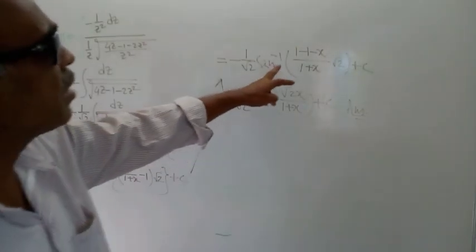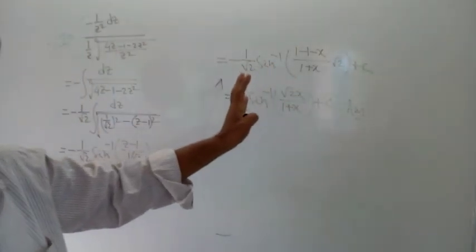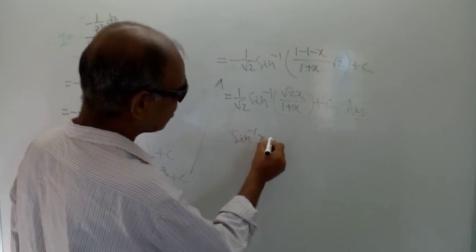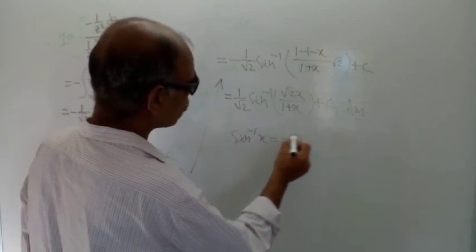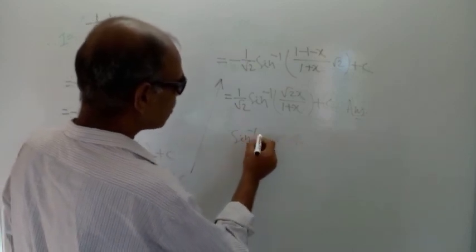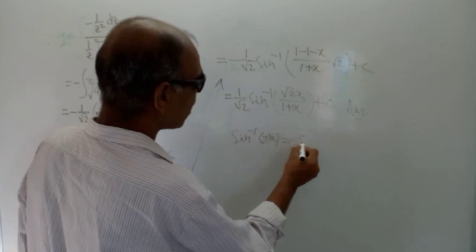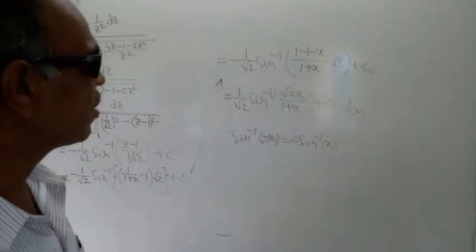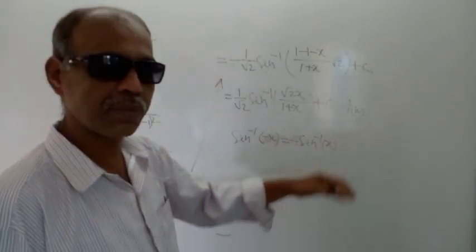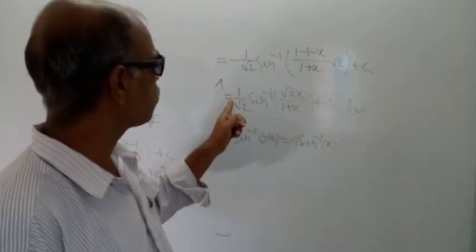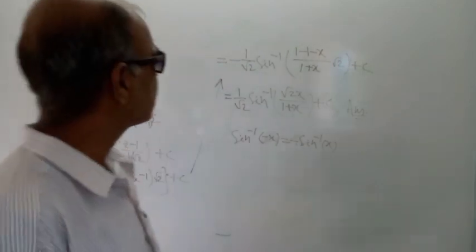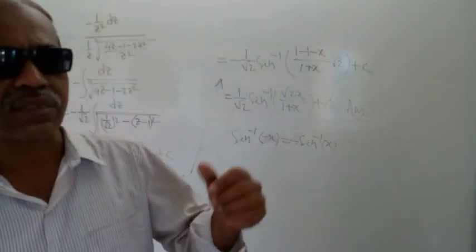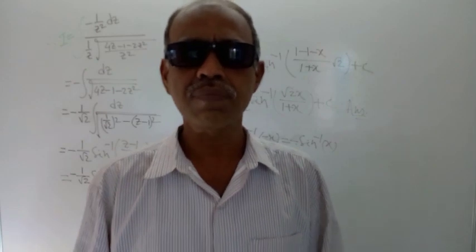We used the identity that sin inverse minus theta equals minus sin inverse theta. Using that, we obtained the positive sign in the final answer. So this is the end of the problem. A few more problems are left in this chapter, that is integration by the method of substitution. Thank you for watching this video.